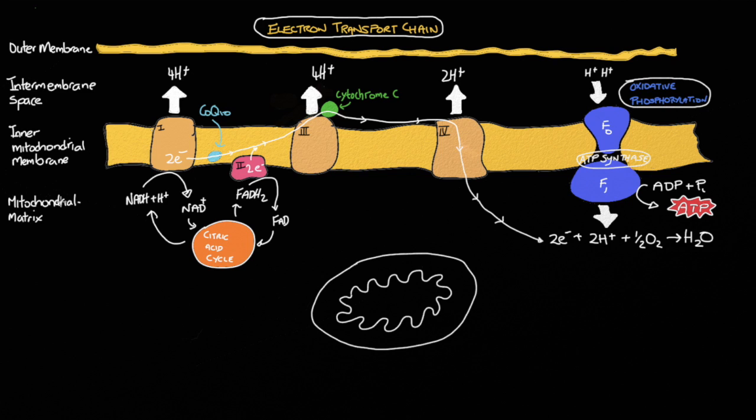Beginning with the center, this is the matrix. This area here represents the matrix within the center of the mitochondrion.